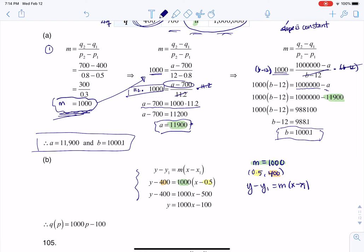But keep in mind, we weren't using y and x here—we were using q and p. That's why you see me writing q(p) equals 1000p minus 100. Thanks so much, everyone!